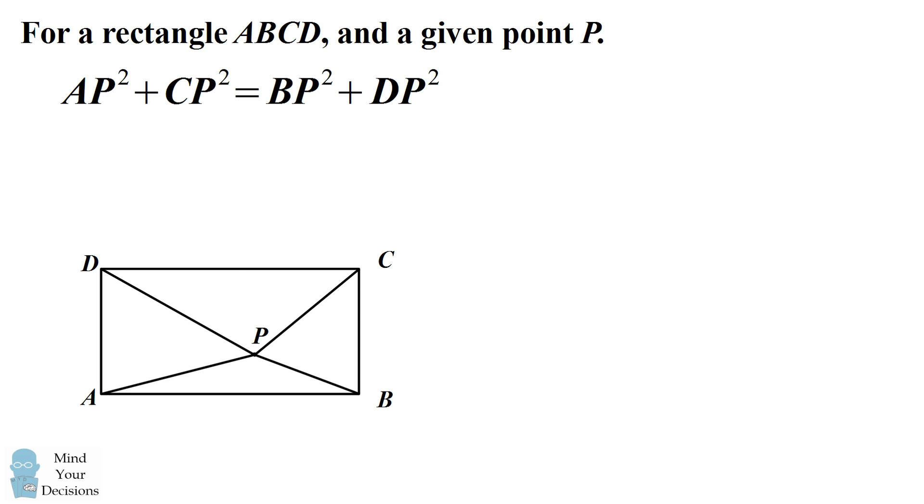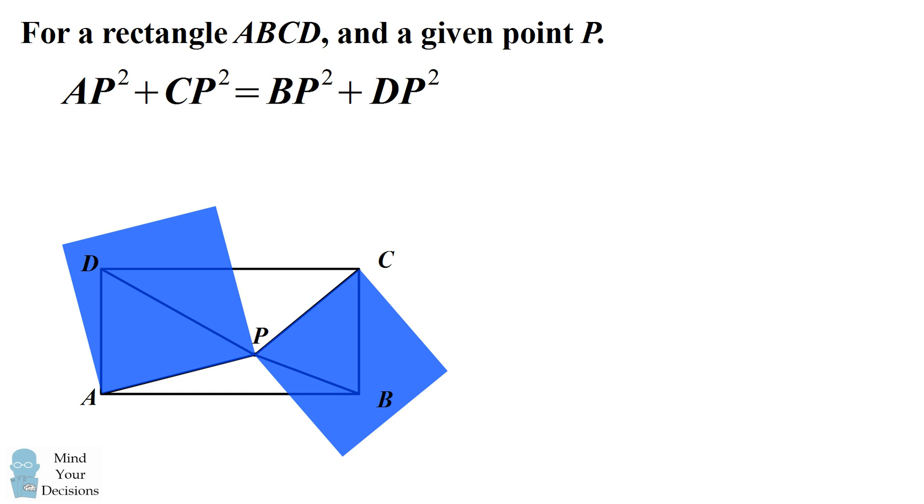We have AP squared which we can represent as an area. That's a square. CP squared we can also draw a square. For the other distances we'll draw them as red squares.